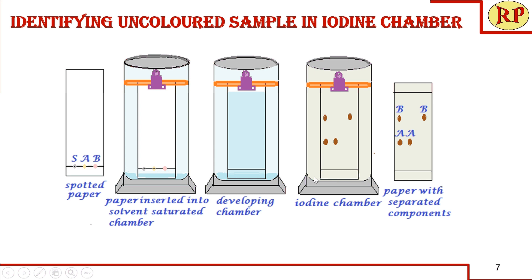A commonly used visualizing agent is an iodine chamber: place iodine crystals at the bottom and insert the developed paper. After some time, the spots become visible. Ninhydrin is generally used to visualize amino acids. If the compounds are fluorescent in nature, you can use a UV chamber — when you shine UV light over the developed paper, the spots appear fluorescent. You must mark the spots while the UV light is on, because once it is removed, the spots will no longer be visible.